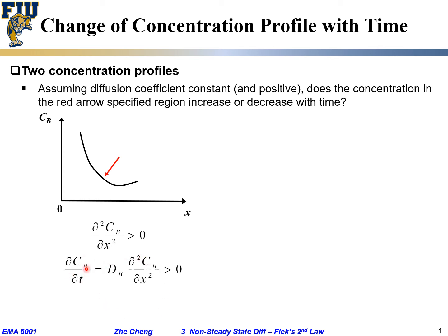Which means the change of concentration with respect to time is greater than zero. Means as time increases, C would increase. Over here, the concentration should naturally increase. Make sense? The curvature.